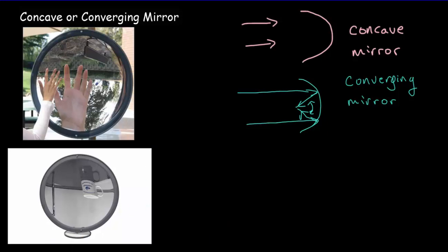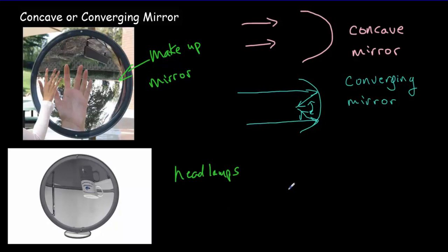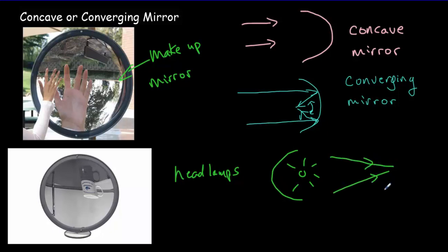The uses of a converging mirror: first is as a makeup or shaving mirror. If you want to see the pores and blemishes on your face, put your face very close to the mirror and you'll get an enlarged image from that converging mirror. Another use is with headlamps for cars. There's a bulb inside the headlamp that produces light in all directions, but if you put a concave mirror behind it, it makes those reflected beams converge and produce a beam. So flashlights and car headlamps use a concave or converging mirror.